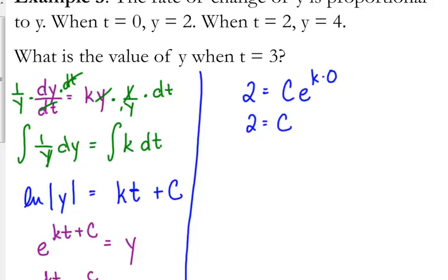Now, it would be nice if we could figure out k. Well, we can do that now. We're going to use the next piece of information. When t equals 2, y equals 4. So 4 is equal to, now we know c, c is 2, e to the k times 2.